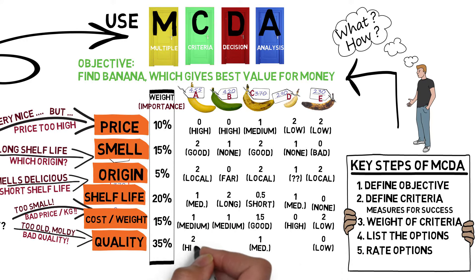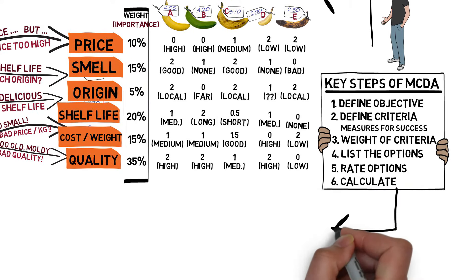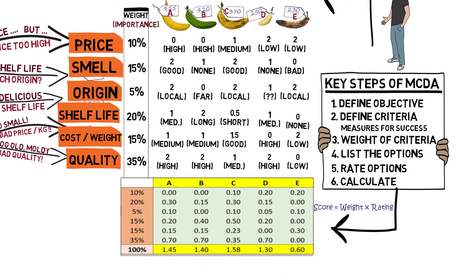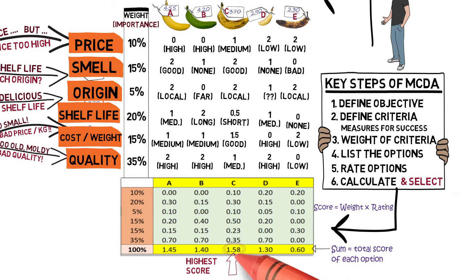Now we need to calculate. Each rating is multiplied by the weight of the criterion to determine the score for each option and criterion. Then you add up all the scores for each banana option. Then you select the winner banana — here it's the middle one, which smells so nice but will have to be eaten soon.